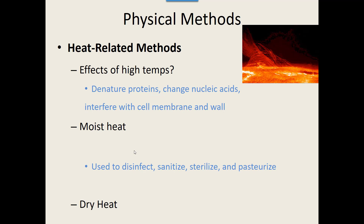Heat changes proteins so they can't work, changes nucleic acids, and interferes with the cell membrane and cell wall — the lipid will liquefy and the wall can start to fall apart. There are two types of heat: moist heat and dry heat. Moist heat is used to disinfect, sanitize, sterilize, and pasteurize. It is way more effective than dry heat.